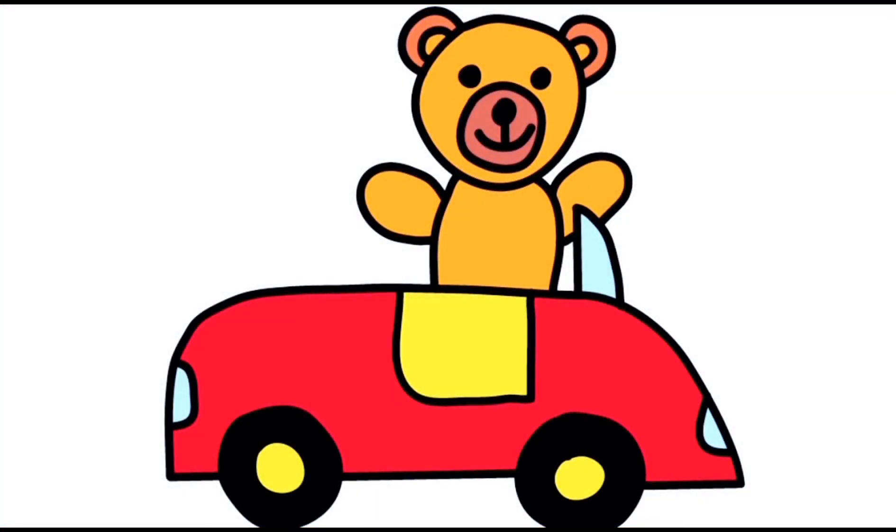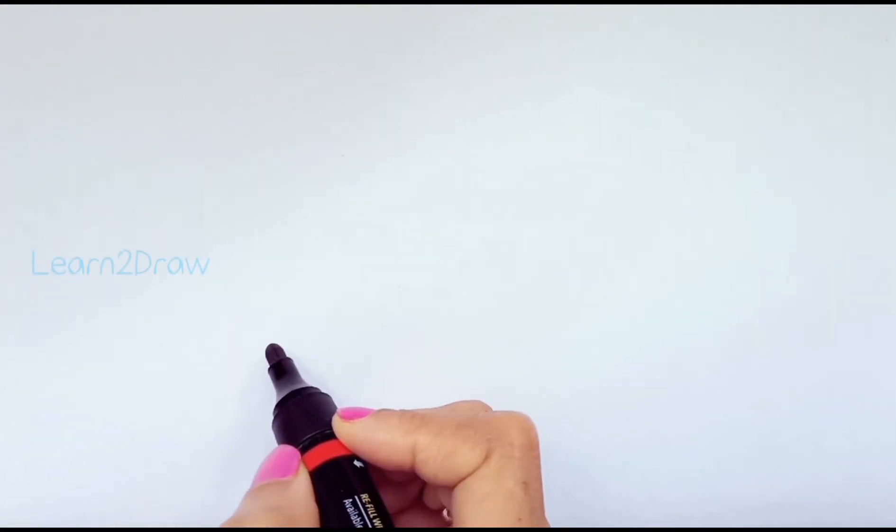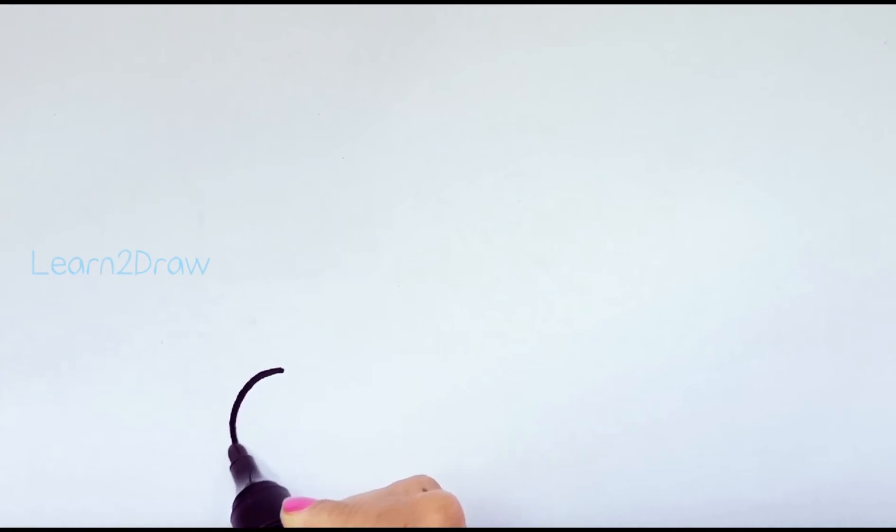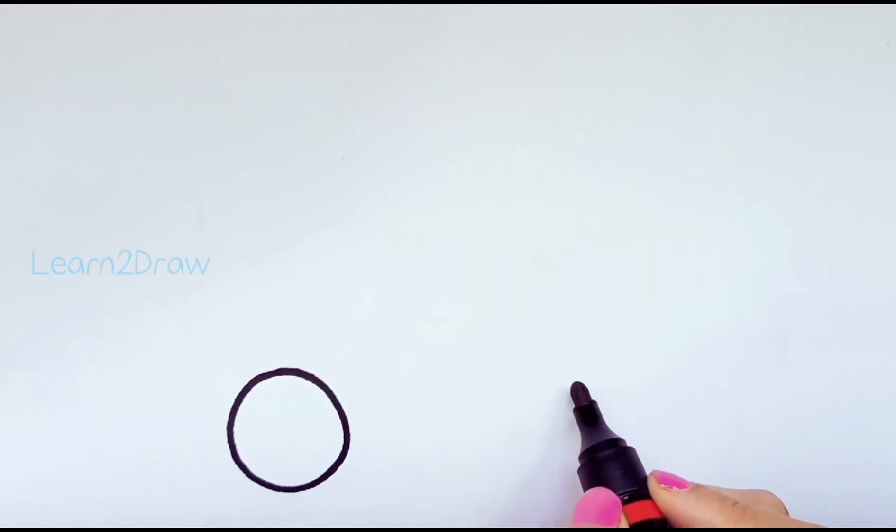Hi there little kids, today we'll learn to draw a nice little car. Let's get started. We'll draw a circle for the car's wheels and another circle towards the side. These are the two wheels for the car.